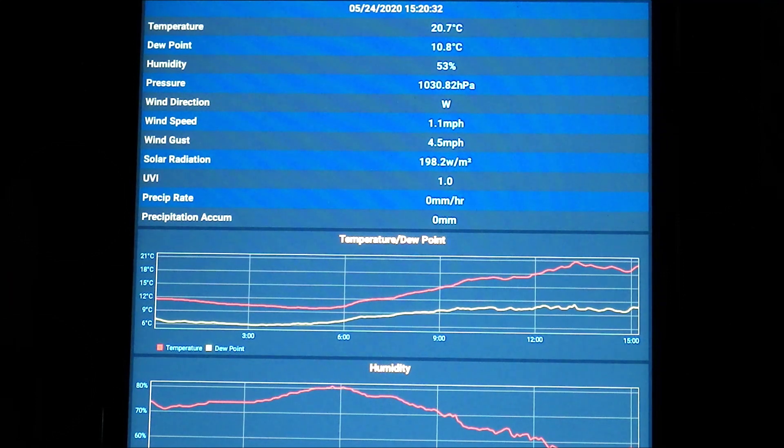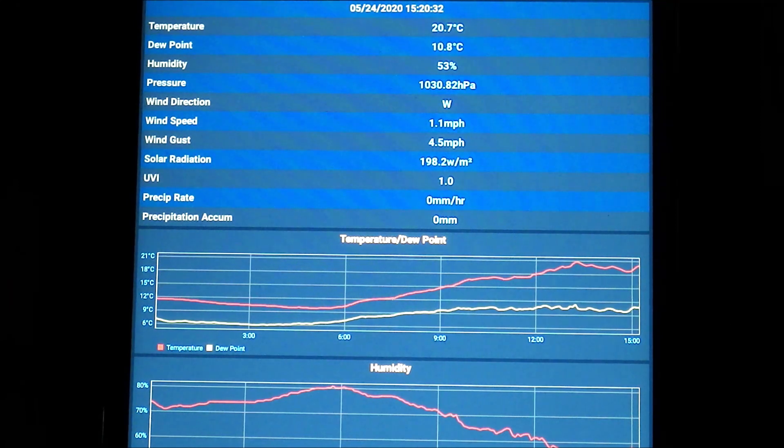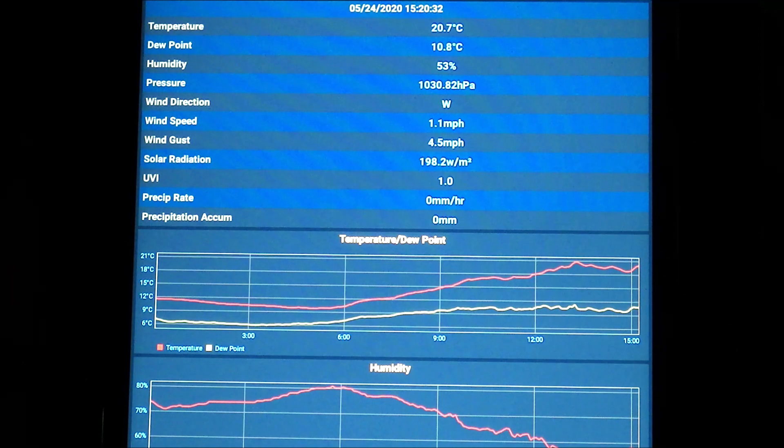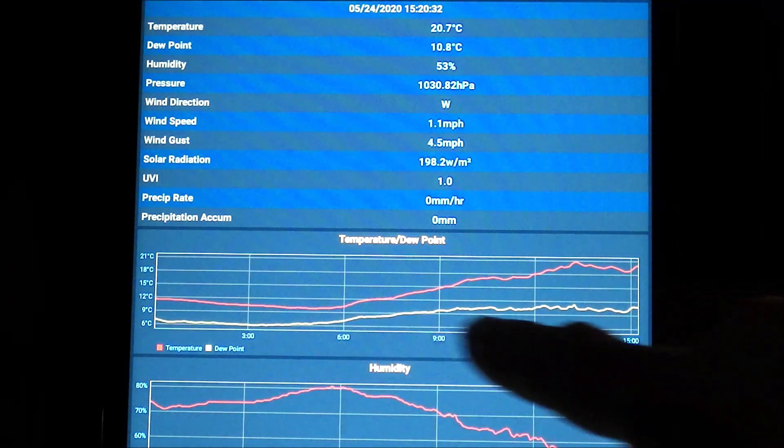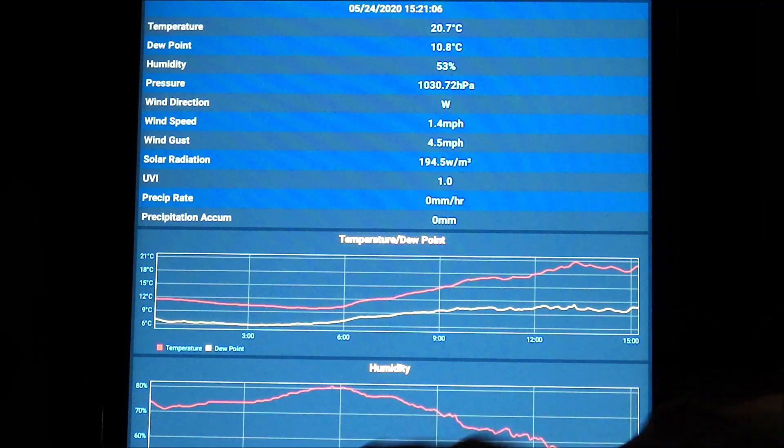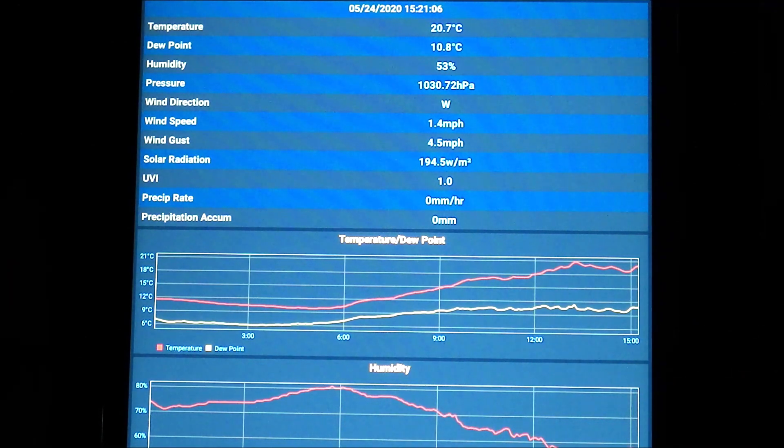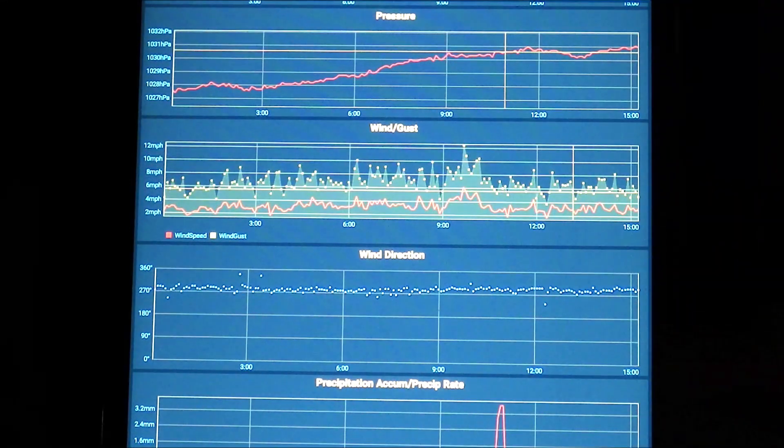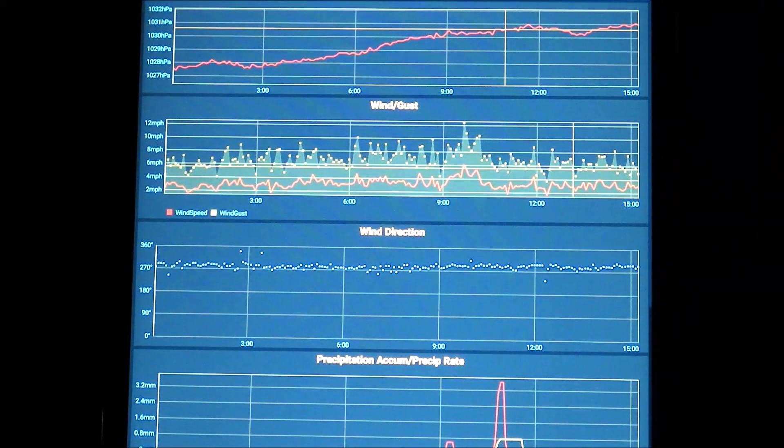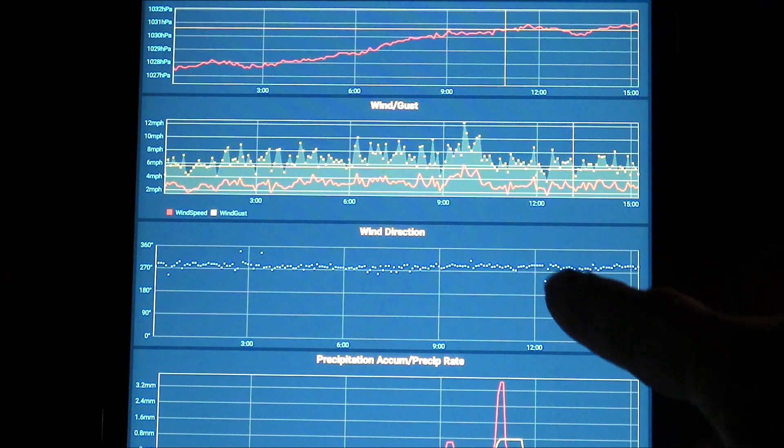We've got our data uploading to the Weather Underground website at weatherground.com, and from that it can actually feed back into the app and show all sorts of graphical displays and data, which is a really nice feature. You can see graphing for temperature and dew point, humidity, pressure, wind gust and average, wind direction, precipitation, solar radiation, and UV index, all graphed really nicely on the screen.